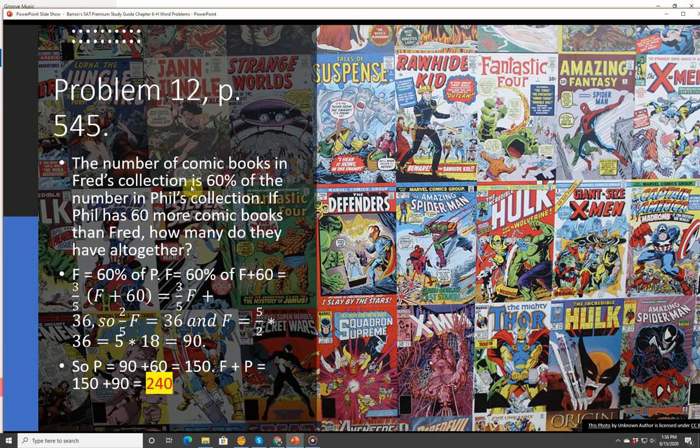Problem 12, the number of comic books in Fred's collection is 60% of the number in Phil's collection. If Phil has 60 more comic books than Fred, how many do they have altogether? F equals 60% of P, where F is the number Fred has, P is the number Phil has. F is 60% of F plus 60. So we know that 3/5 of F plus 60 equals 3/5 F plus 36. So 2/5 F equals 36, and F equals 5/2 times 36, which is 5 times 18, which is 90. So P equals 90 plus 60, which is 150. F plus P equals 150 plus 90, which is 240, which is the right answer.